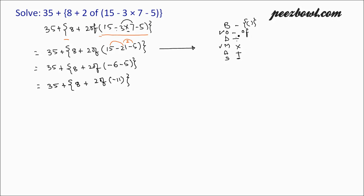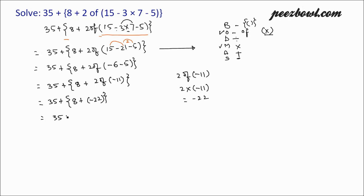Now we have 35 plus 8 plus 2 of minus 11. Here 'of' has the meaning of multiplication. So 2 of minus 11 is 2 multiplied by minus 11, that is minus 22. At this place we are multiplying plus and minus, and when we multiply plus and minus the result is minus.